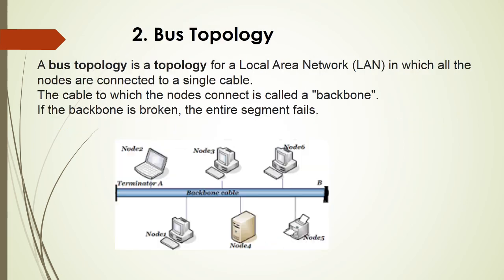Bus topology is a topology for a local area network in which all nodes are connected to a single cable, also called the backbone cable. The biggest disadvantage is that if the backbone cable is broken, the entire segment fails — all computers connected to this backbone will stop working.